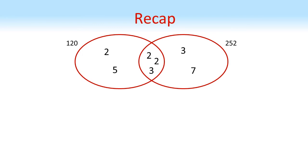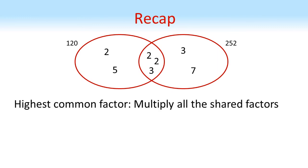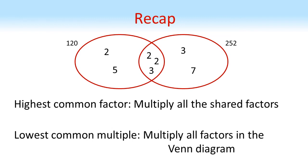To recap: to find the highest common factor and lowest common multiple of two numbers, rewrite the numbers as products of their prime factors, put all the factors into a Venn diagram with shared factors in the middle, multiply the shared factors for the highest common factor, and multiply all factors in the whole diagram for the lowest common multiple.